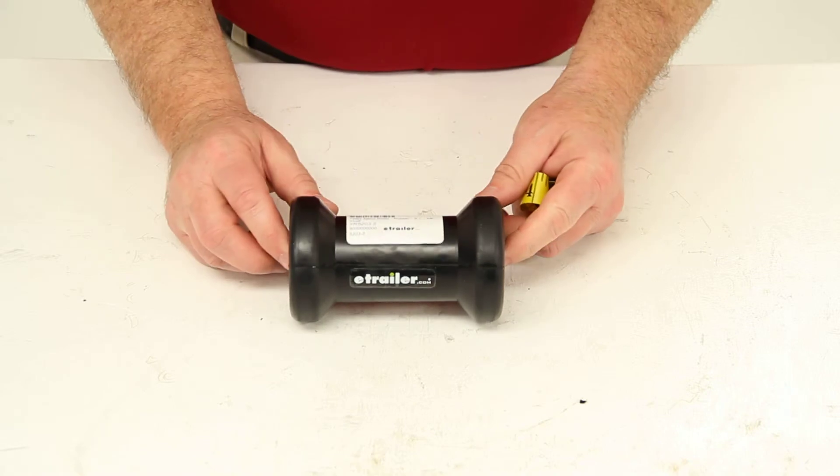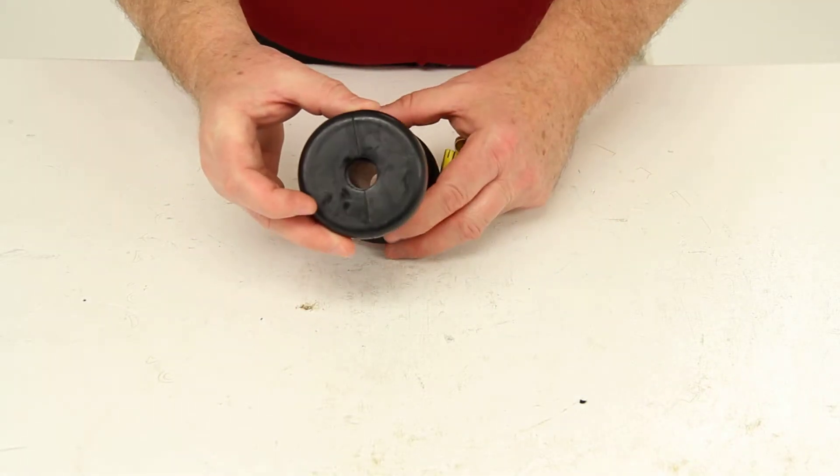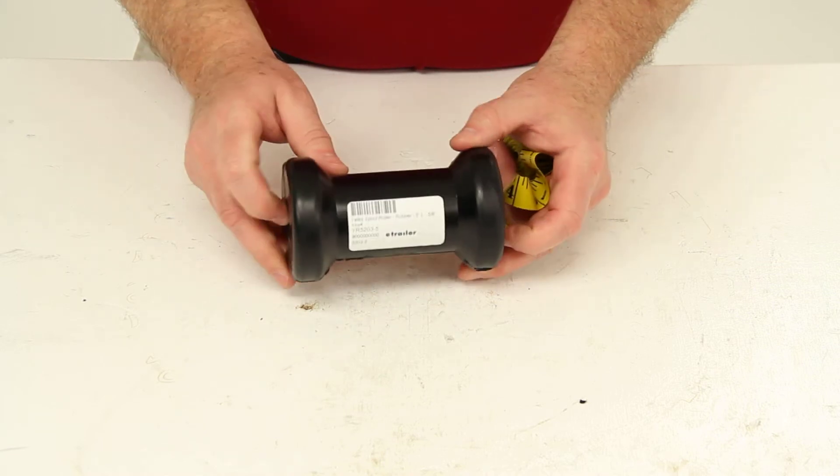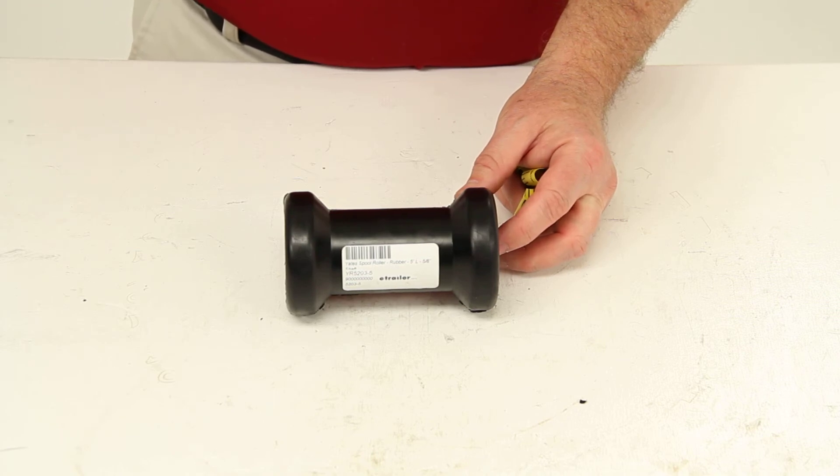And this roller is designed to fit on a 5-inch wide bracket that uses 5-eighths inch diameter shaft. And that'll do it for part number YR5203-5.